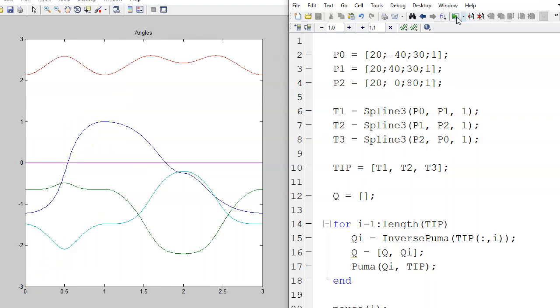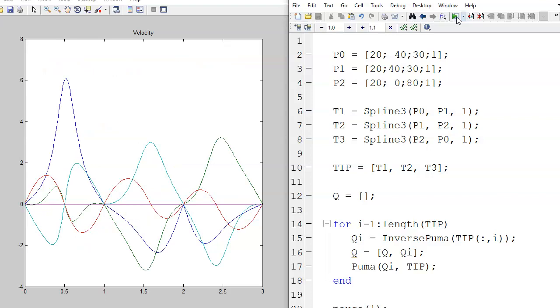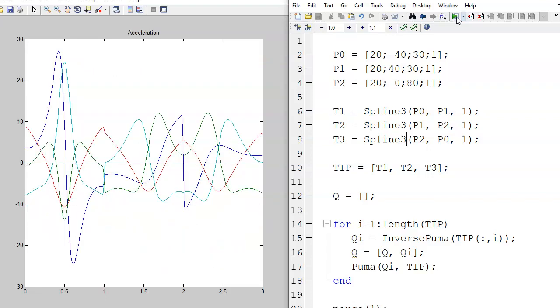Velocity, these are parabolas. And acceleration will be straight lines. Not quite straight lines, because I have all these sines and cosines for the robot. That gives you jump discontinuity at these points as well. Very similar to a cosine interpolation. Very hard to tell the difference. Kind of your choice.